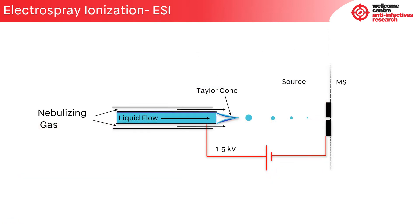The electrospray process is stable only at relatively low flow rates, typically 10 to 20 microlitres per minute. To make the process more compatible with the flow rates typically used in HPLC and UPLC, a nebulizing gas, usually nitrogen, is used which flows concentric to the capillary needle. The gas is believed to reduce droplet size at higher flow rates and therefore increases the efficiency of ion transfer into the gas phase.